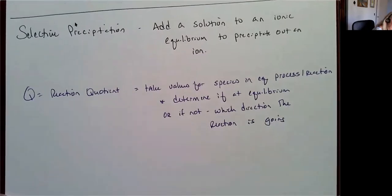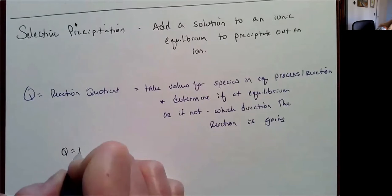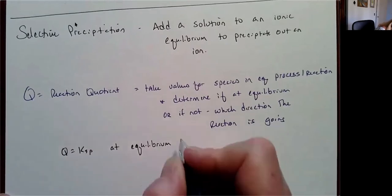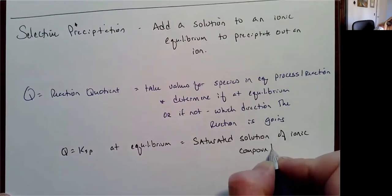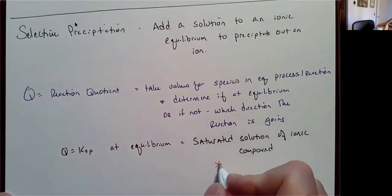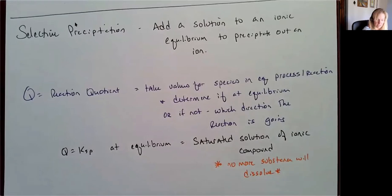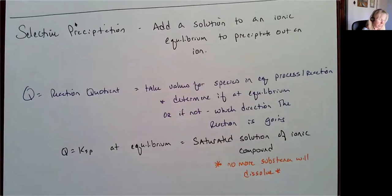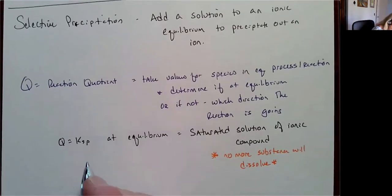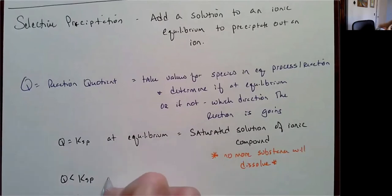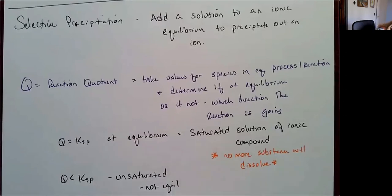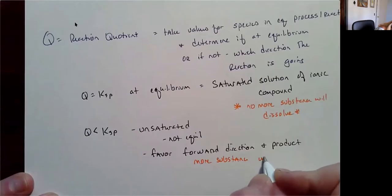I'm going to apply this to Ksp. If Q equals Ksp, then I'm at equilibrium and I have a saturated solution of my ionic compound — no more of that substance is going to dissolve. If Q is less than Ksp, then I'm unsaturated, not at equilibrium, and I'm going to favor the forward direction, which means more of that substance will dissolve.